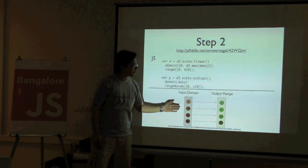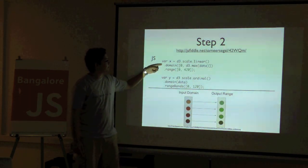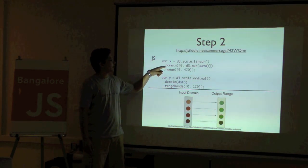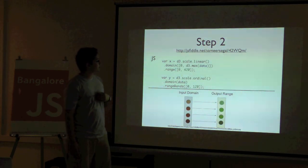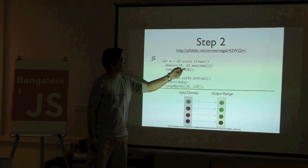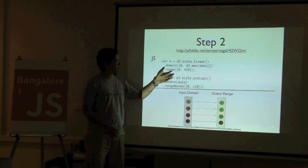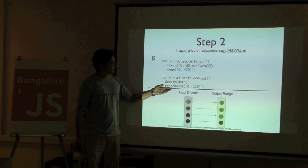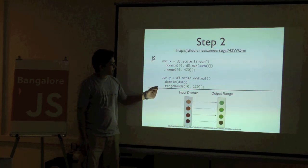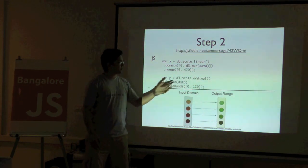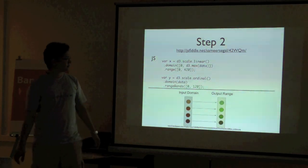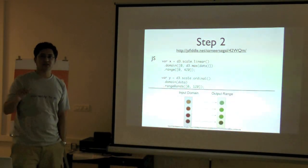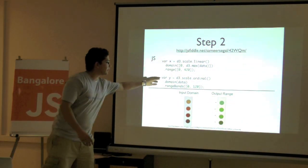Similarly, the Y scale is ordinal — in the sense that you could even have text, like branch names, which is discrete rather than continuous data. So you could have anything over here. Now I've specified my X and Y scales. Let's start with actually plotting the graph. I select the body, create an SVG element, and specify the attributes I want — the width and the height of my graph.